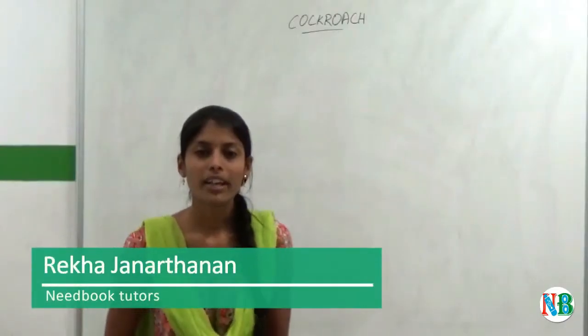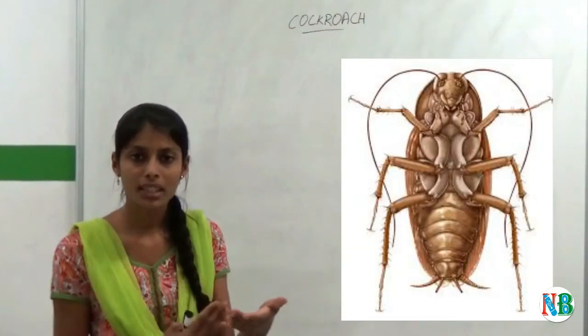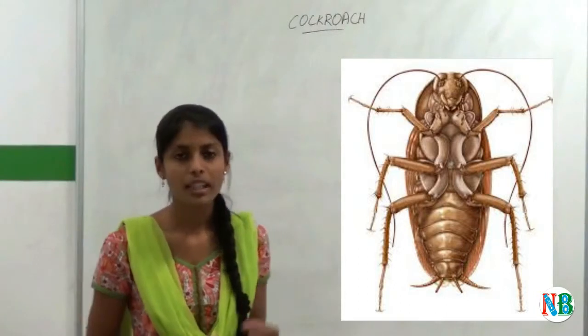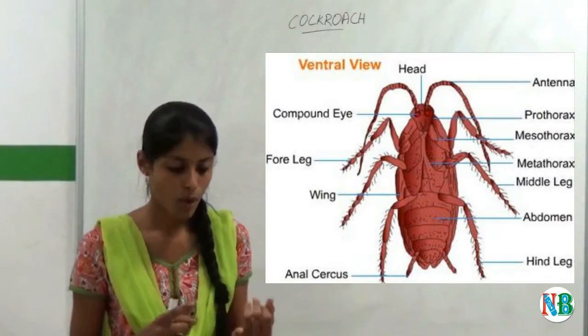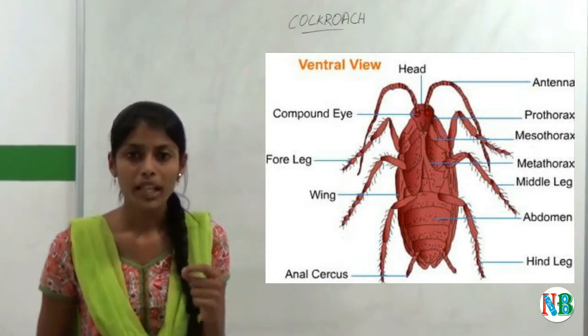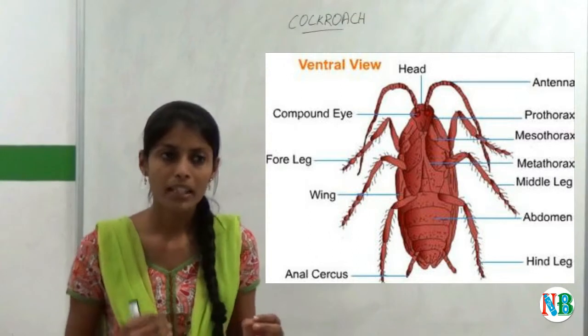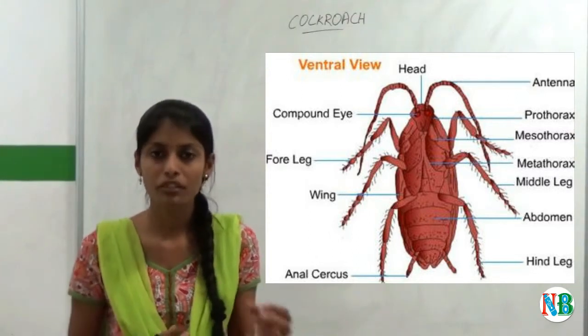Now we will see the ventral view of cockroach. As I already told you, in ventral view we can see their limbs. Limbs are also called its appendages. In cockroach there are three limbs: one is forewing and middle and hindwing. If you take forewing and middle, moreover they will look similar. But hindwing will be larger when compared to forewing and middle.